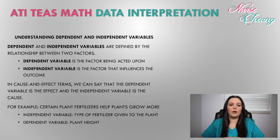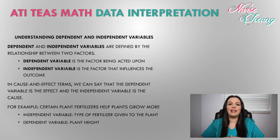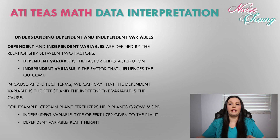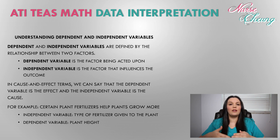We're going to summarize dependent and independent variables. They are defined by the relationship between two factors. A dependent variable is a factor that is being acted upon, and an independent variable is a factor that influences the outcome. In cause-and-effect terms, the dependent variable is the effect and the independent variable is the cause. For example, certain plant fertilizers help plants grow more — the independent variable is the type of fertilizer, and the dependent variable is the height the plant grows.